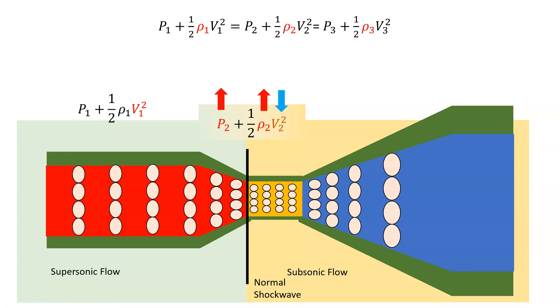So for supersonic air, we want a duct that is convergent, and then divergent. Convergent to bring the speed down to subsonic levels, and then divergent, like a normal subsonic flow. When it goes through the divergent section, the velocity continues to decrease, and the pressure continues to increase, which is what we want when we feed it into a compressor.